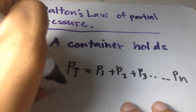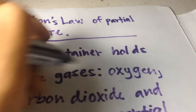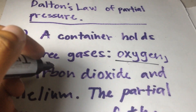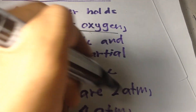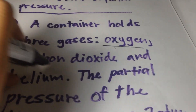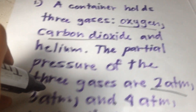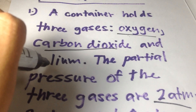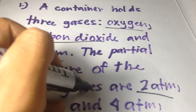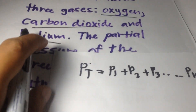The partial pressure of oxygen gas is 2 atm, carbon dioxide is 3 atm, and helium is 4 atm.